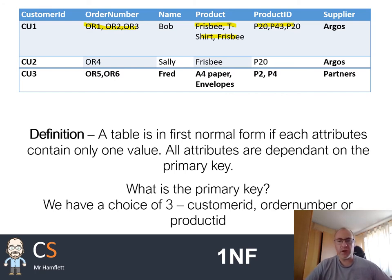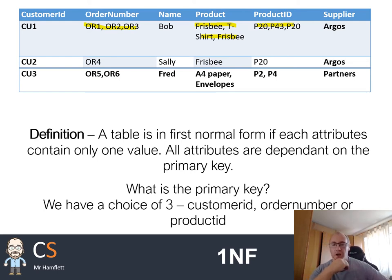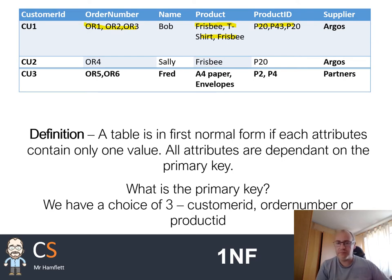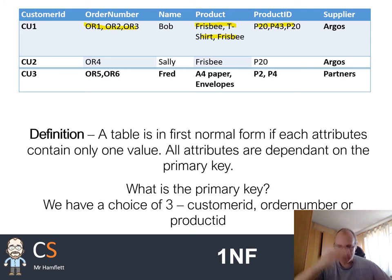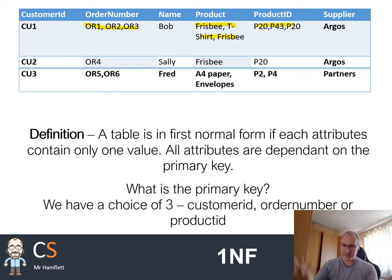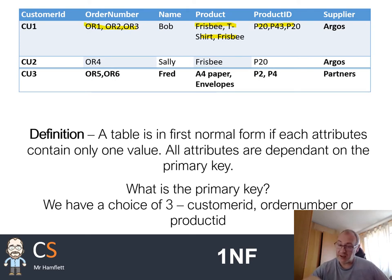The word 'dependent' can be hard to understand — I'll go into more detail in second normal form. Think of it this way: if something is dependent on something else you can't really separate them, whereas something that's merely related can be split off. For example, my name and date of birth are dependent on me — they're part of who I am. But the DVDs I own are just related to me, not part of who I am.